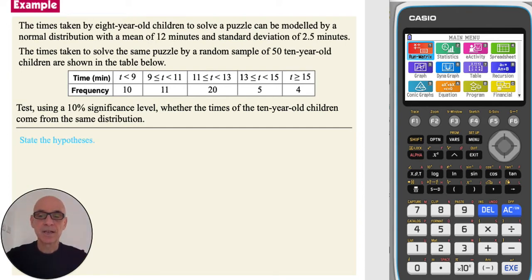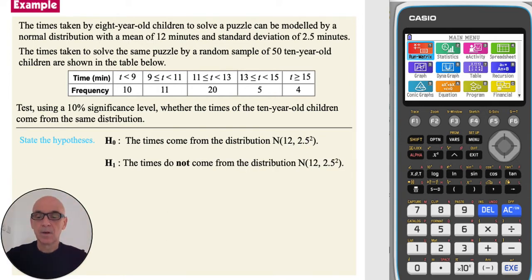Starting by stating the hypotheses, the null hypothesis H0 is that the times for the 10-year-old children do fit a normal distribution with a mean of 12 and a standard deviation of 2.5. The alternative hypothesis H1 is that the times the 10-year-old children do not fit that normal distribution.